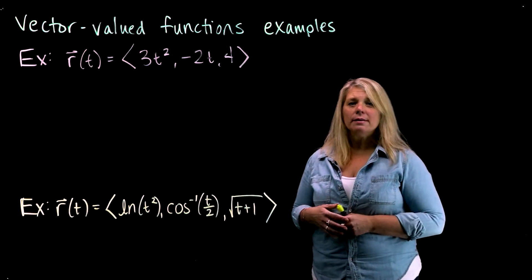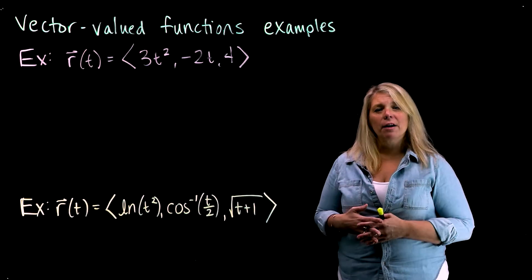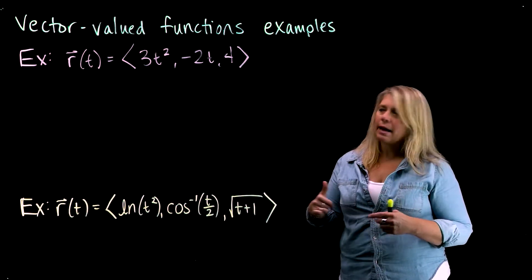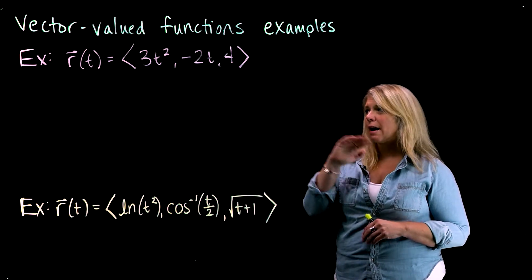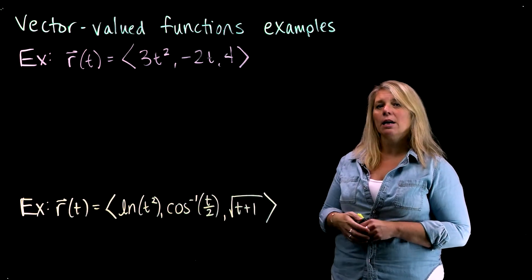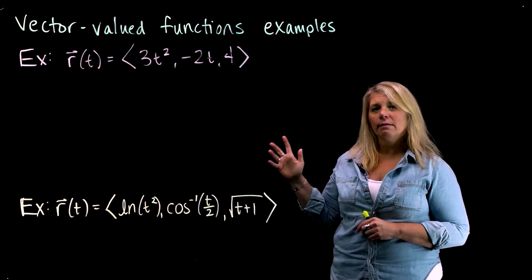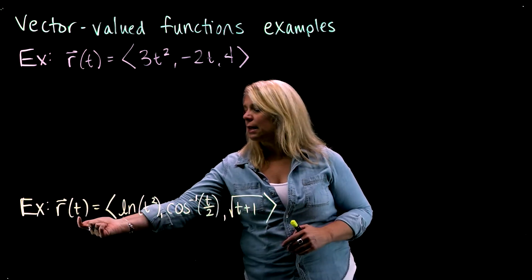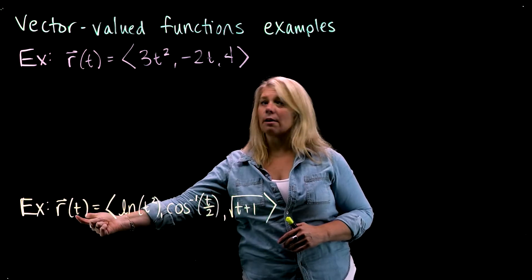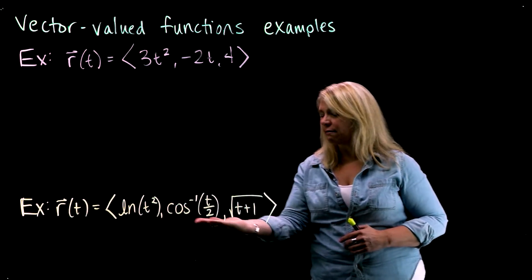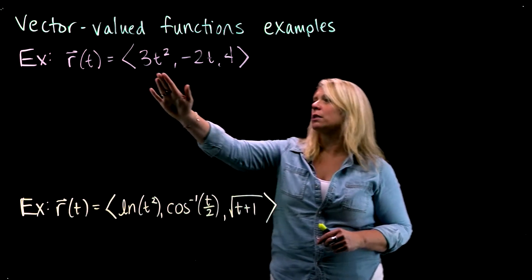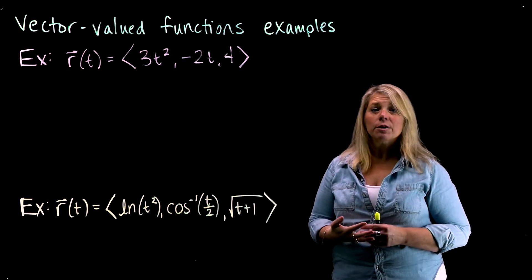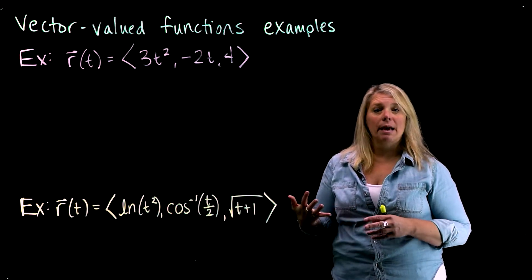We're going to look at a couple of examples of working with vector-valued functions and thinking about inputs, outputs, and domain. I have two different vector-valued functions written here, one simpler than the other. They're both written in this notation so that we can see the input is t, a real number, and the output is a vector in R3. This second example has much more complicated component functions than the first, so you would expect it to have some more complicated properties.